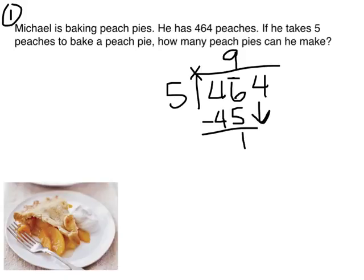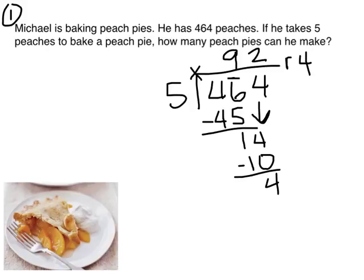I'm going to bring down my four so I can divide in the ones place. How many times does five go into fourteen? Five goes into fourteen twice. What's two times five? Two times five is ten. When I subtract, there are four left over. So I have ninety-two, remainder four.